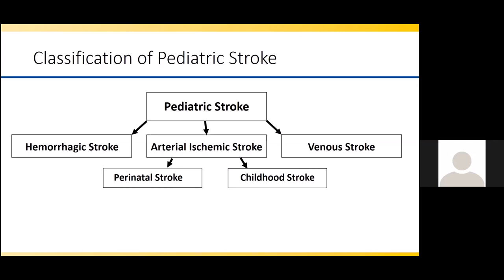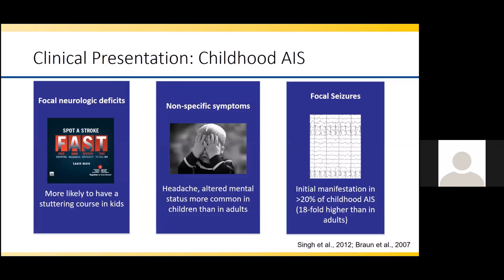Childhood stroke is stroke that occurs between 28 days of life and 18 years of life. This is what we typically think about when we think about stroke, and this differentiation is important not only for understanding how children present and how we treat them, but also for understanding the causes of stroke. Childhood stroke often presents similarly to adult stroke. Focal neurologic deficits are a really common presentation, and the same symptoms we look for in adults — such as facial droop, arm weakness, or speech difficulty — are the same things we can see in children at the onset of their stroke.